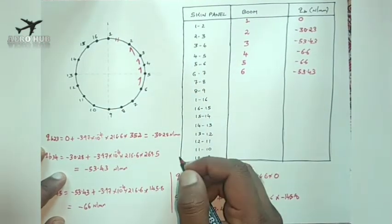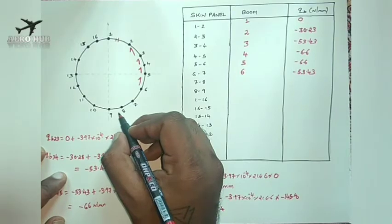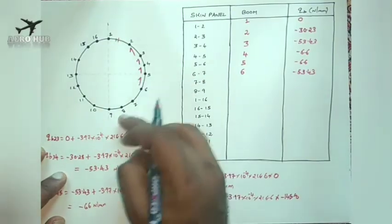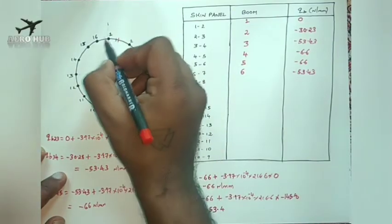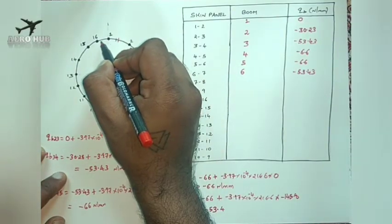After completing the calculation and completing portion 8-9, you have to start from portion 1-16. QB1-16 must then be calculated, continuing up to boom number 9.